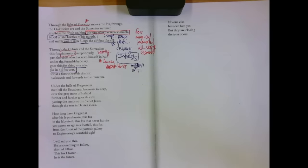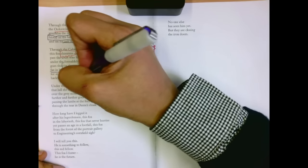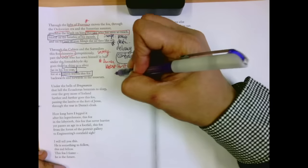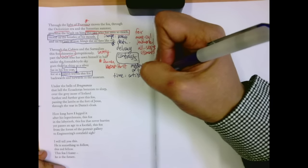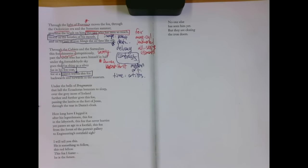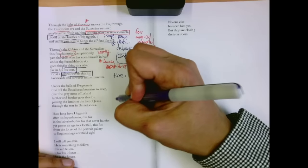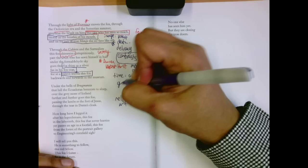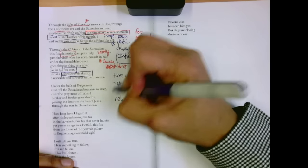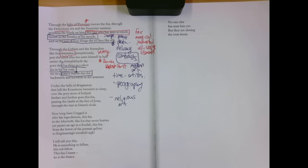For at a foxtrot travels this fox backwards and forwards in the museum. So we get time and artists' movements, and it's not only about moving forward. The fox shows us, as the museum does, if we look carefully, that time doesn't only move forward. It's moving backwards and forwards. Under the bells of Brugmansia that lull the Ecuadorian botanists to sleep, over the grey moss of Iceland, further and further goes this fox, passing the lambs at the feet of Jesus, through the tear in Dante's cloak. Now we get religious art. We get geography. So we're covering time periods, biology, geography, everything, and only, again, the way a museum can.